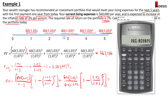Note: here we are assuming that the first payment starts one period from today. If the first payment starts immediately (annuity due), you can change the payment mode to BGN on the calculator. Currently we are using the ordinary annuity mode.